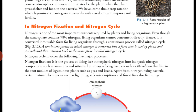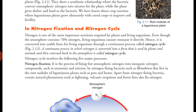Nitrogen is one of the most important nutrients required by plants and living organisms. Even though the atmosphere contains 78% nitrogen, living organisms cannot consume it directly. Nitrogen is essential for plant growth, but plants cannot take it directly from the atmosphere — they can only use it in the form of nitrates. So the whole process of converting nitrogen into nitrates and returning it back to the environment is called the nitrogen cycle.